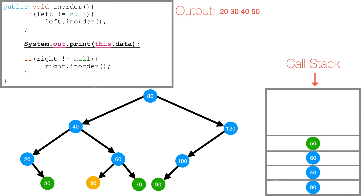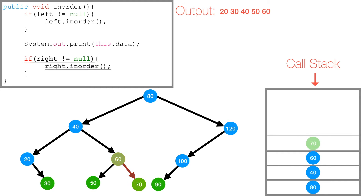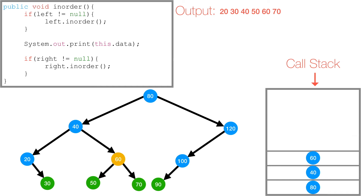50 is pushed to the call stack. We check if 50's left is null — it is — so we print 50. Then 50's right is also null, so 50 gets popped off the call stack and we're back at 60. We've explored 60's left subtree, so we print 60. Then we check if 60's right is not null — it's not — so we call in-order on 60's right subtree. 70 gets pushed to the call stack. 70's left is null, so we print 70. Then 70's right is also null, so 70 gets popped off the call stack and we're back at 60.